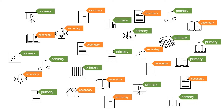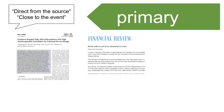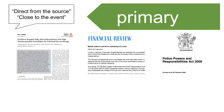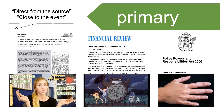Primary sources of information come directly from the source of that information. This includes journal articles or reports that describe original research, records of personal experiences like diaries or autobiographies, newspaper articles that report the writer's own investigations or observations, photographs, audio recordings or creative works like music or paintings, raw data and statistics, and primary sources of the law including statutes and law reports.